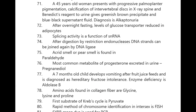Accurate or pure smell is found in paraldehyde. The most common metabolite of progesterone excreted in urine is pregnanediol. A seven-month-old child develops vomiting after fruit juice feeds and is diagnosed with hereditary fructose intolerance; the enzyme deficient is aldolase B. Amino acids found in collagen fiber are glycine, lysine, and proline. The first substrate of the Krebs cycle is pyruvate.